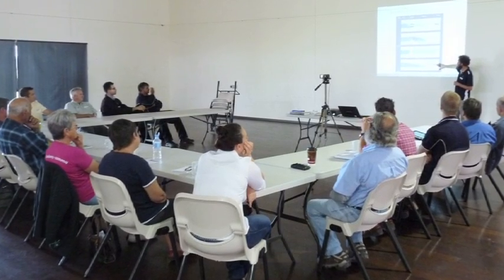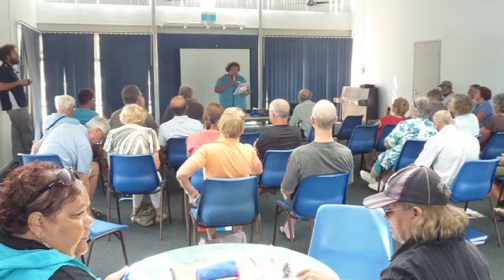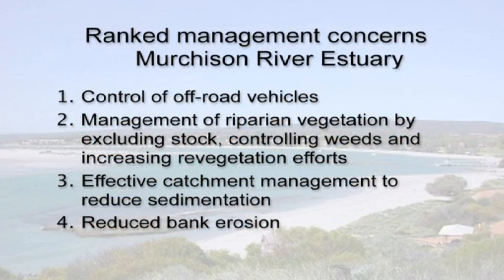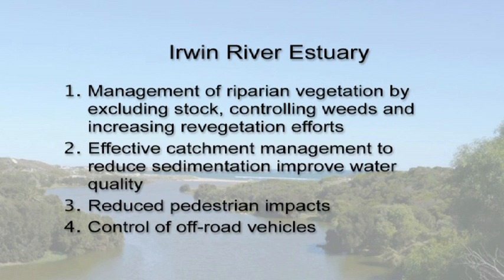At each workshop, attendees were asked to rank the top three management issues they would like to see addressed for their local estuary, and the results were combined to create a ranked list of management concerns for each estuary. For the Murchison River estuary, workshop participants clearly ranked the control of off-road vehicles as a priority, followed by management of riparian vegetation by excluding stock, controlling weeds and increasing revegetation efforts. Effective catchment management to reduce sedimentation and the reduction of bank erosion were also considered important. Workshop attendees ranked the improvement of water quality as the highest priority for the Greenough River estuary, with management of riparian vegetation and control of off-road vehicles also highlighted. Managing riparian vegetation to reduce sedimentation and improve water quality were ranked highly amongst the local community of the Irwin River estuary.